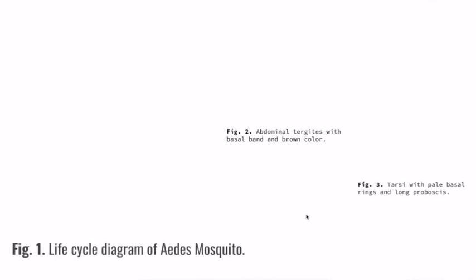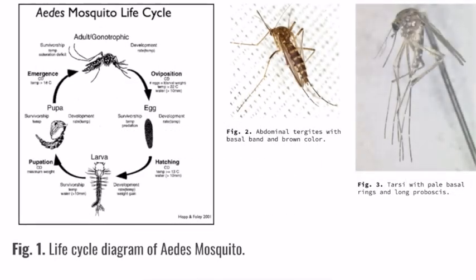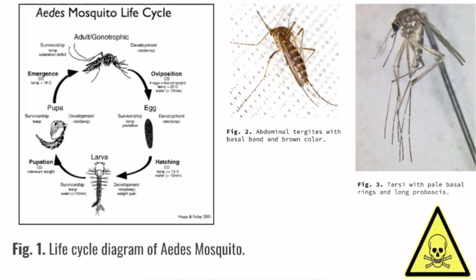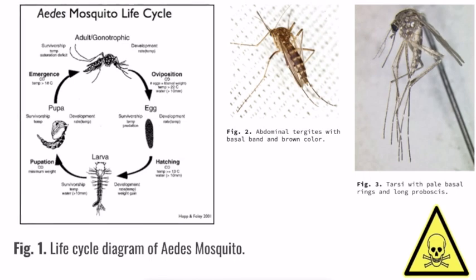On this slide, we're going to be looking at some pictures. In figure one, you have the life cycle of the Aedes mosquito — from the egg to the larval, to the pupa, and then the adult — and then it's just a cycle over and over again. In the other pictures of the mosquito, you can see its brown color and the B-shaped basal bands, and also that the abdomen is pointed. In figure three, we can see that the proboscis is just longer than the palps, as mentioned before.